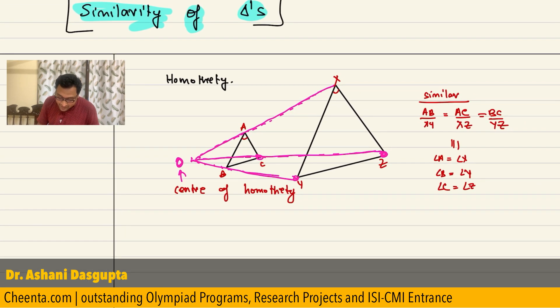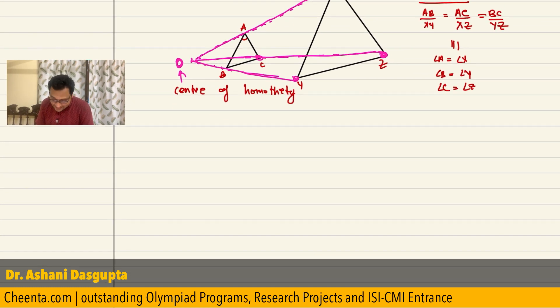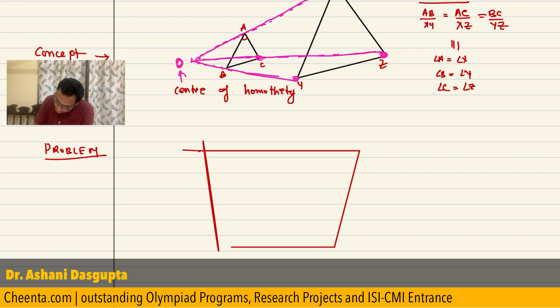What is this problem from American Math Competition 2012? Well, the problem is like this: you have a trapezoid, a trapezium.